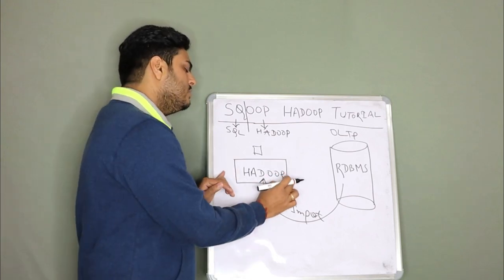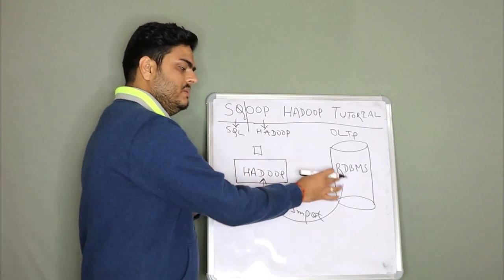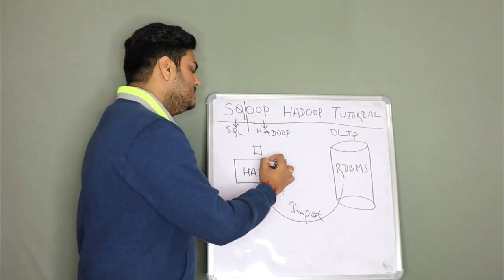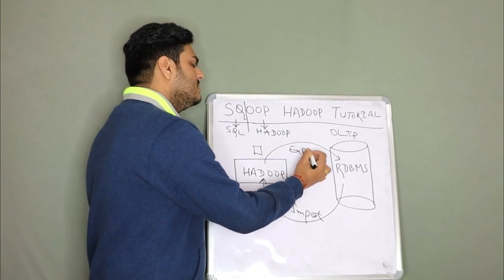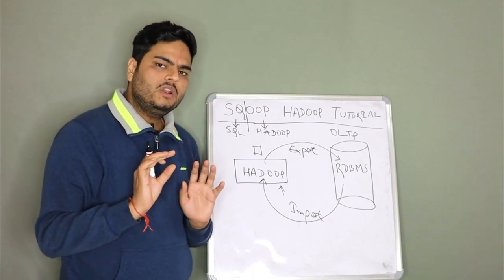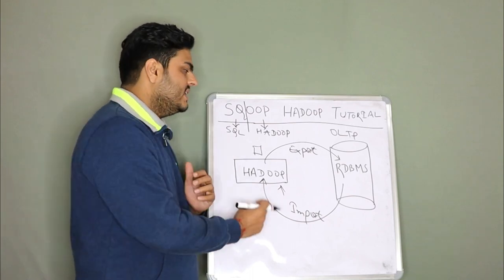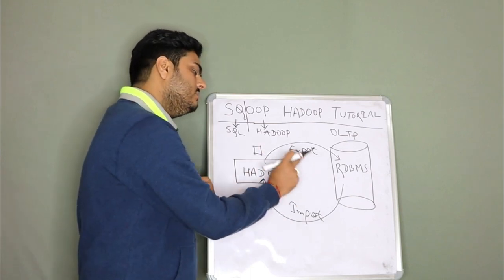We want to push the data from the hive table to one of the table in RDBMS. We want to just push the data for some reason. Let us say we do some calculation here. The calculated value we want to push to a RDBMS database table. How to do that? Using export. What utility will help us in doing this? Sqoop utility again.